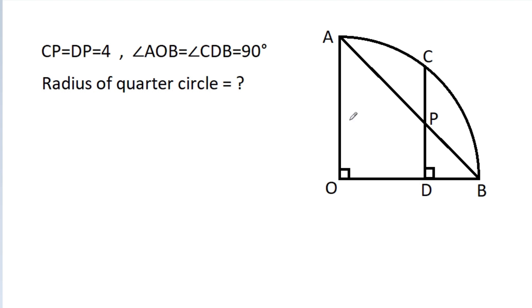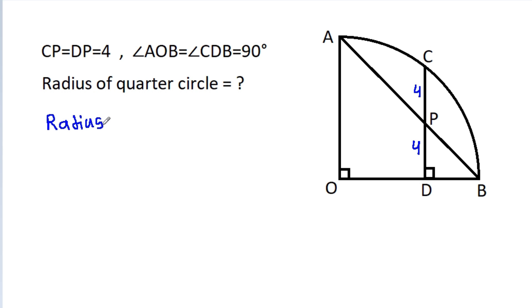In this video, we have given a quarter circle in which CP is 4, DP is 4, angle AOB is 90 degrees, and angle CDB is 90 degrees. We have to find the radius of the quarter circle. Suppose the radius is equal to R, then AO will be equal to BO, which will be equal to R.